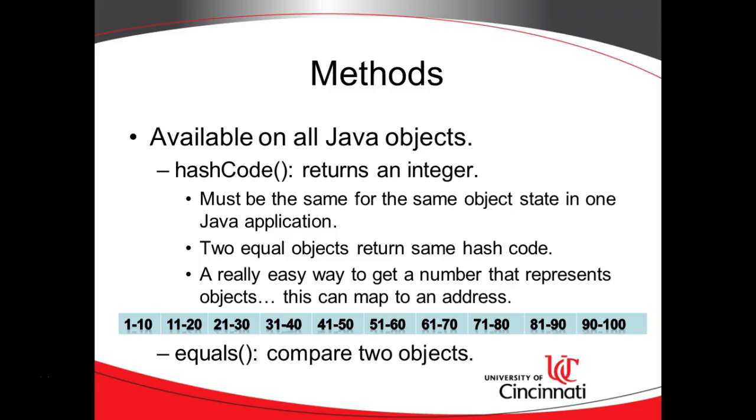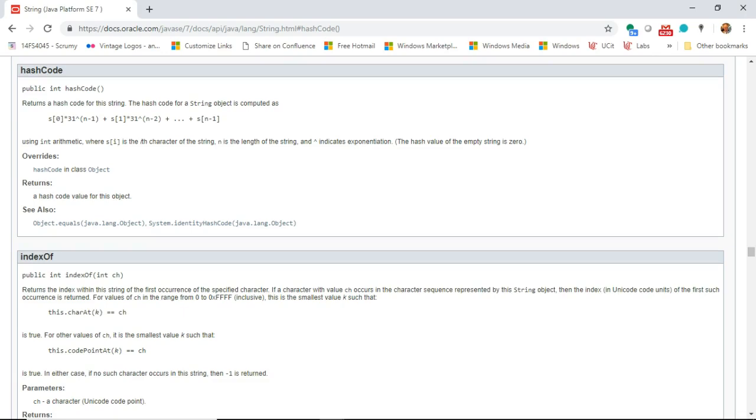Some methods that we want to know. First of all, these methods are available on all Java objects because they are defined in the great grandfather-grandmother class, java.lang.object. One of them is called hashCode. HashCode will return an integer that is relatively unique, but not guaranteed to be unique.